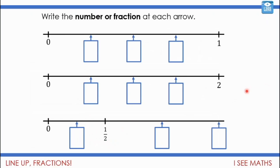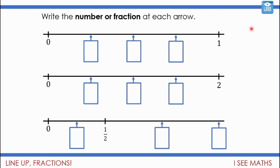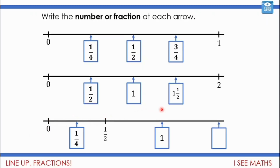Okay, write the number or fraction at each arrow. Pause the video and have a go. So the first one — we've got three boxes but four steps — so we go a quarter, a half or two quarters, three quarters and one. The next one: we have a half, one, one and a half and two — splitting the gap from zero to two into four equal pieces. And what about this last one? Well this is a half, and what is a half of a half? It's actually a quarter. If this is a half then another half gets me to one. This space is a quarter, this is a half — so the next space is another half, getting us from one to one and a half.